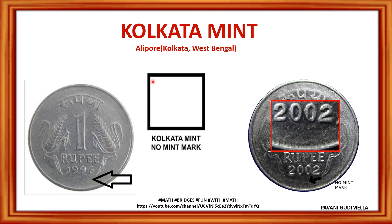Kolkata mint has no symbol. If you observe a 1996 one-rupee coin, there is no symbol on the coin, which means this coin was manufactured at Kolkata mint. Similarly, a 2002 one-rupee coin also has no mint mark. So whenever there is no mint mark, we should understand that this coin has been made at Kolkata mint.